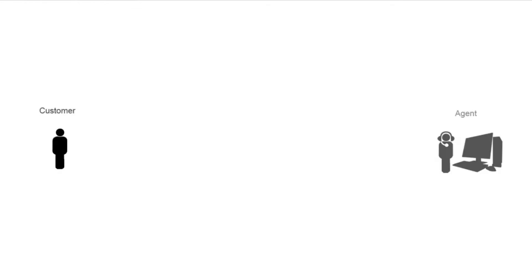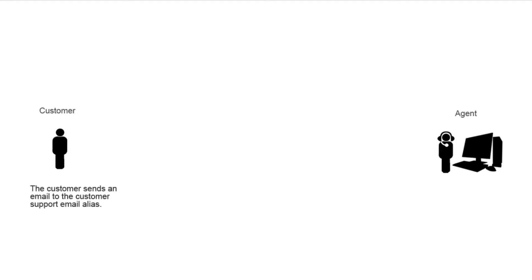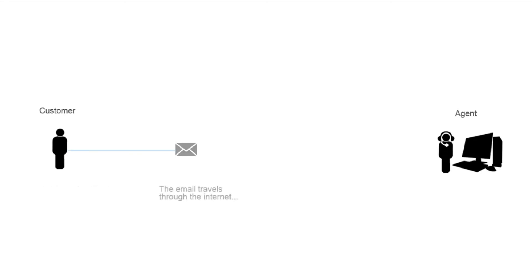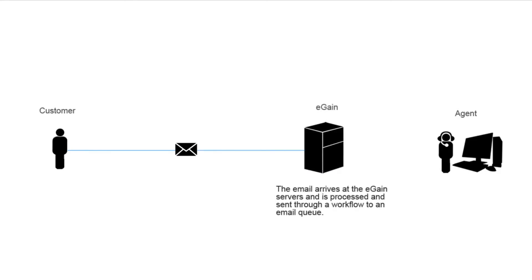This is our customer and our agent. Our goal is to get the customer's email to the agent. When the customer sends an email to the customer service email alias, the email travels through the internet and it then arrives at the eGain servers.